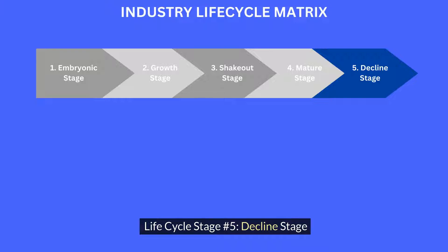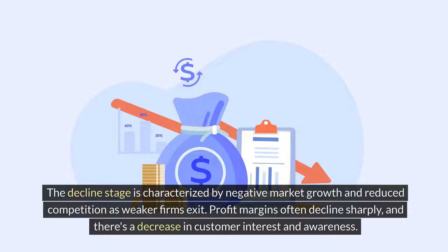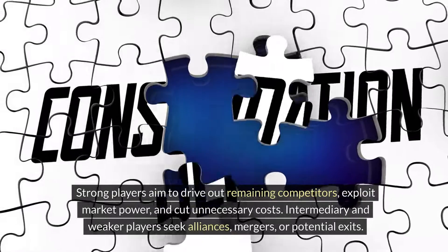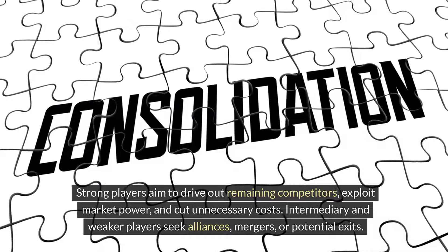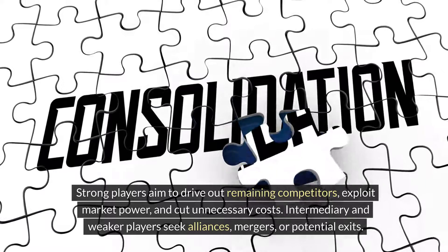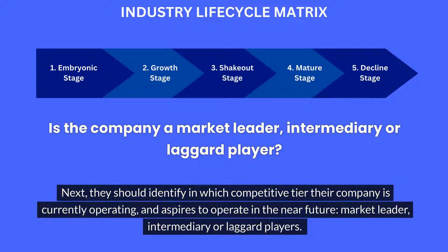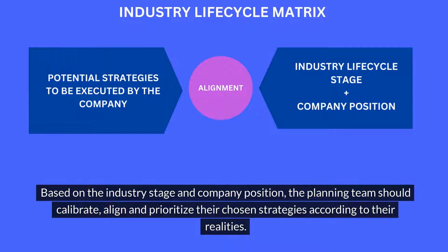Life cycle stage number five — the decline stage. The decline stage is characterized by negative market growth and reduced competition as weaker firms exit. Profit margins often decline sharply, and there's a decrease in customer interest and awareness. Strategies should involve cost cutting, portfolio rationalization, and potential exit strategies. Strong players aim to drive out remaining competitors, exploit market power, and cut unnecessary costs. Intermediary and weaker players seek alliances, mergers, or potential exits. When using the Industry Lifecycle Matrix, the planning team should first understand which are the current and near-future stages of their industry, then identify which competitive tier their company operates in — market leader, intermediary, or laggard — and calibrate and prioritize their chosen strategies accordingly.